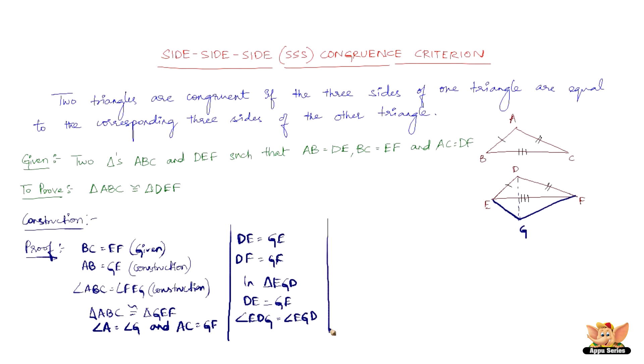Now in triangle FGD, we have DF equals GF. And then we have angle FDG equals angle FGD.